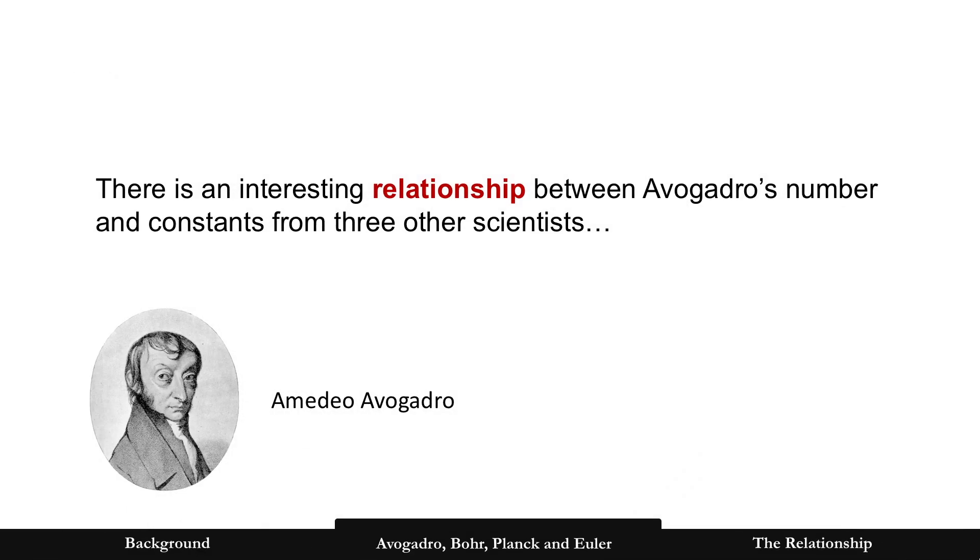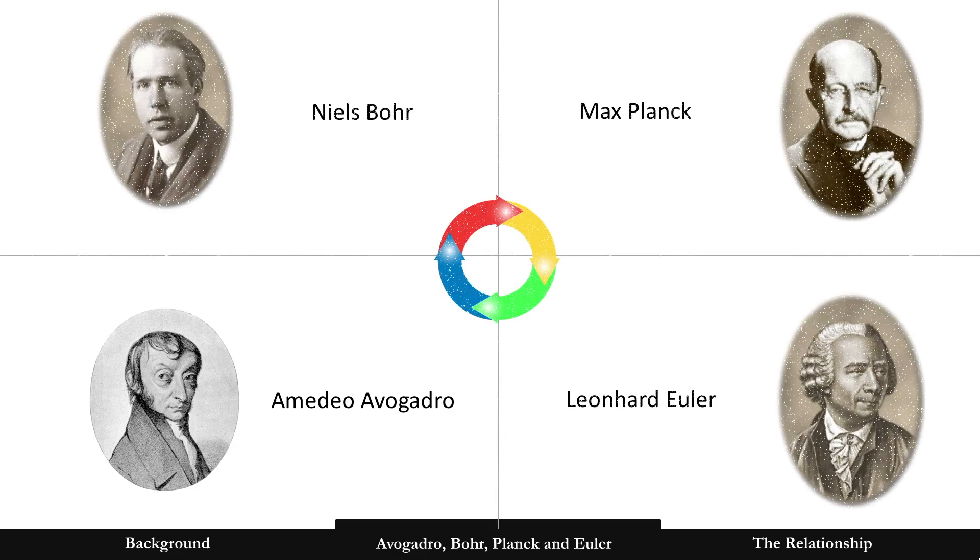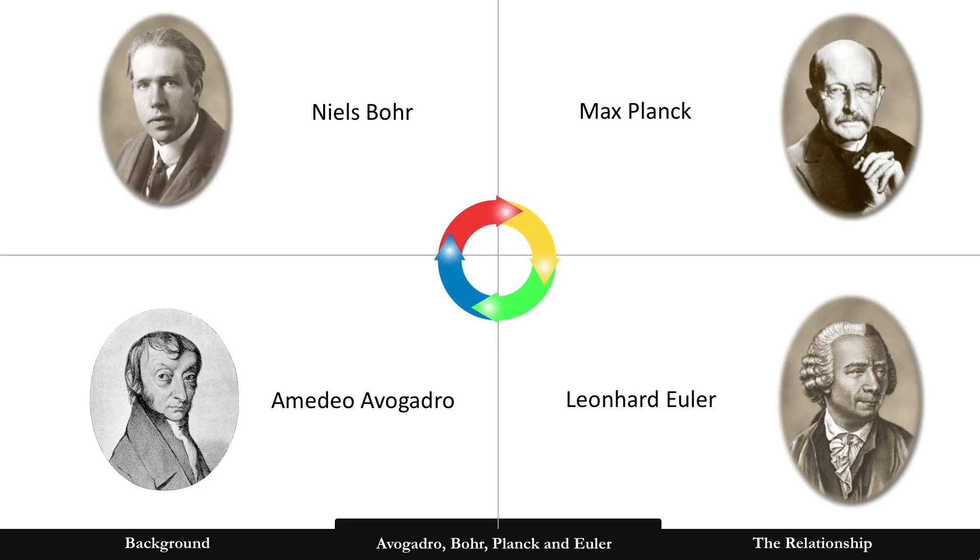So, we're going to explore another relationship. Faraday found the relationship between charge and that number, or more specifically, proportional to a mass of a substance, which later became Avogadro's number. But let's now relate Avogadro's number to constants from three other scientists. Who are they? Bohr, Planck, and Euler.